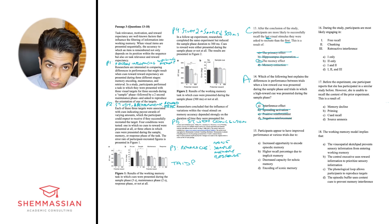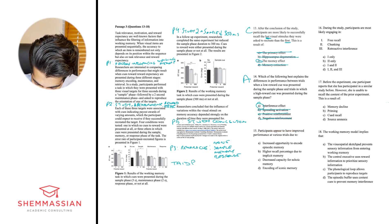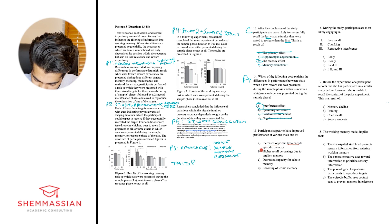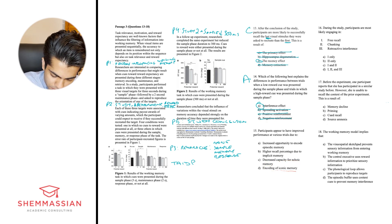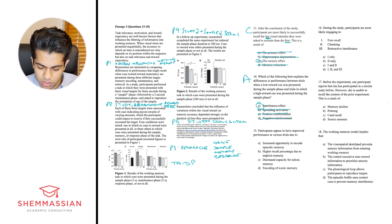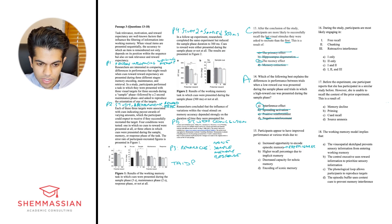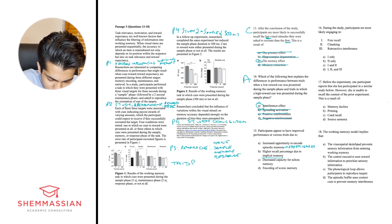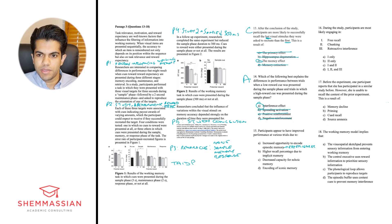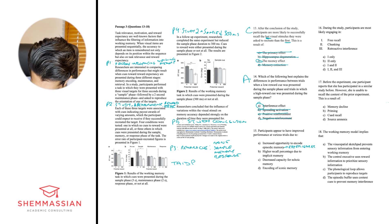Question 3: Participants appear to have improved performance at various trials due to: A) increased opportunity to encode episodic memory, B) higher recall percent due to implicit memory, C) decreased capacity for echoic memory, or D) encoding of iconic memory. Episodic memory is tied to experiences — like remembering your 14th or 15th birthday party. Implicit memory is more procedural — like how to drive a car or ride a bike. Echoic memory is auditory — things you hear.